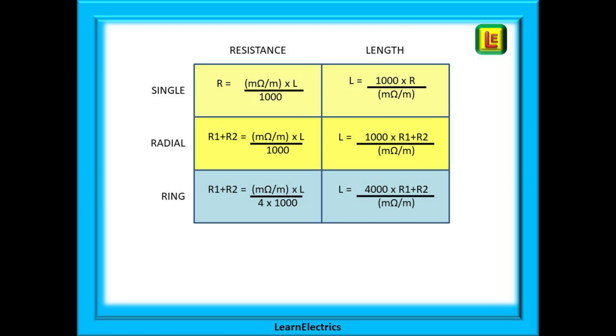And this slide shows the six variations of the same formula that we have just used. To use it, is it a single, radial or ring circuit on the left, and then choose the correct column for resistance or length and apply that version of the formula.